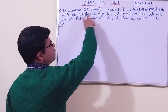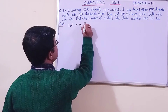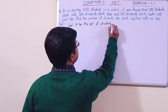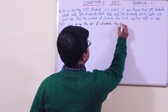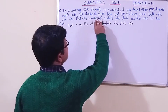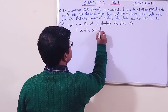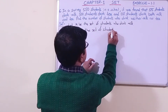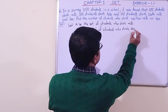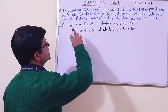It was found that 175 students drink milk. Let M be the set of students who drink milk, and let T be the set of students who drink tea.